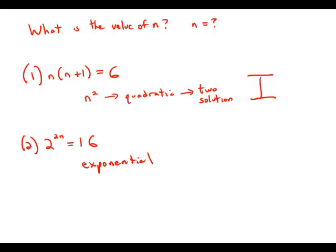Unlike a quadratic, an exponential equation is always unambiguous. There's always just one value of the variable for any given output. Here we have an output of 16, which means we'd be able to determine a unique value of n.